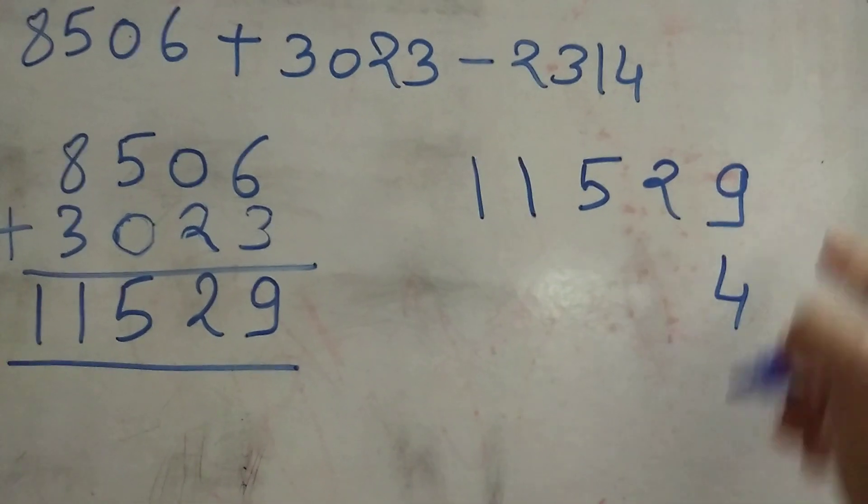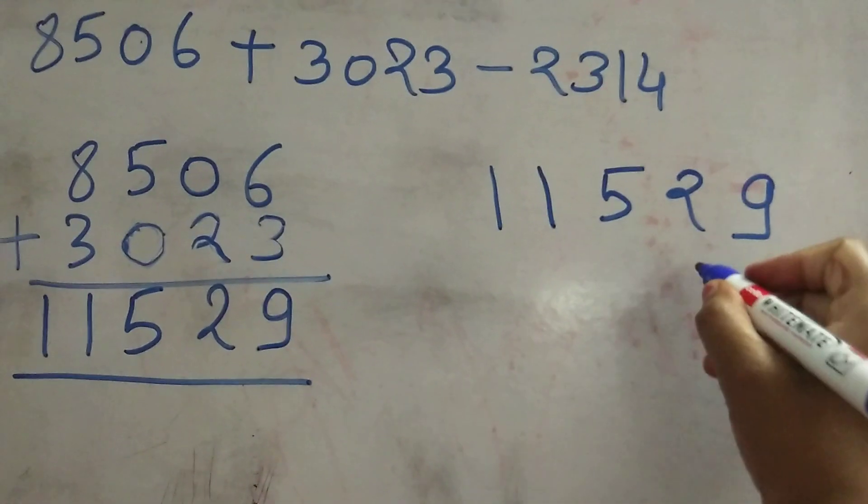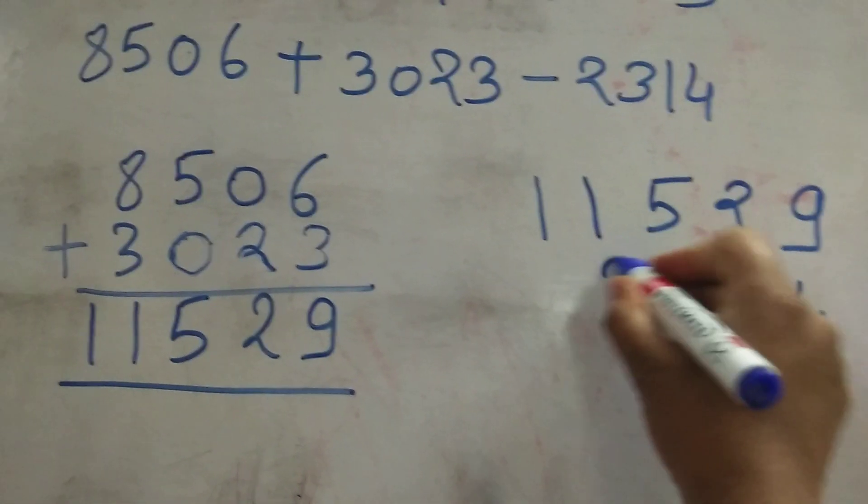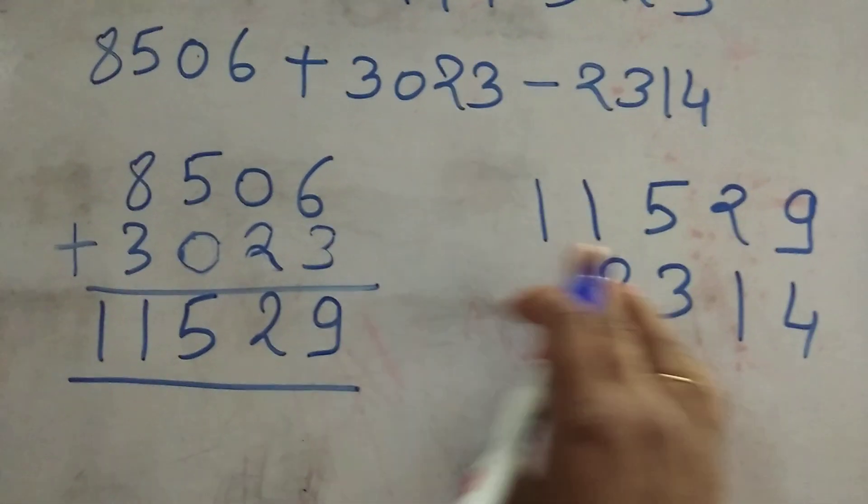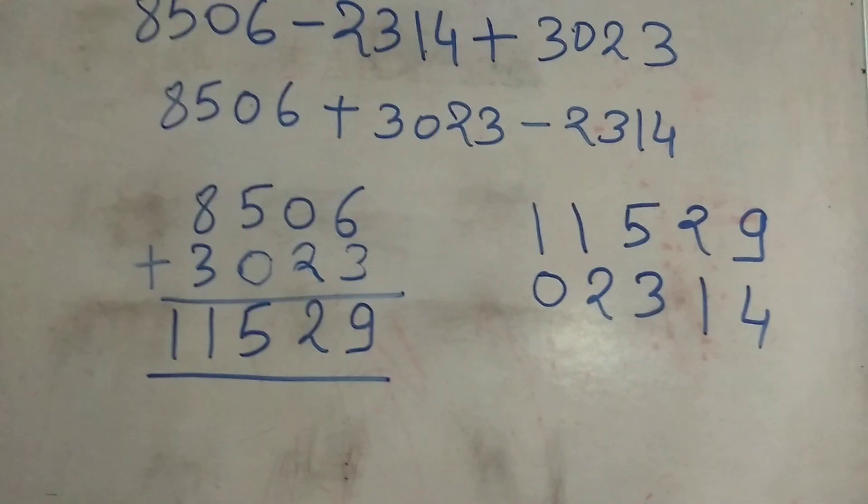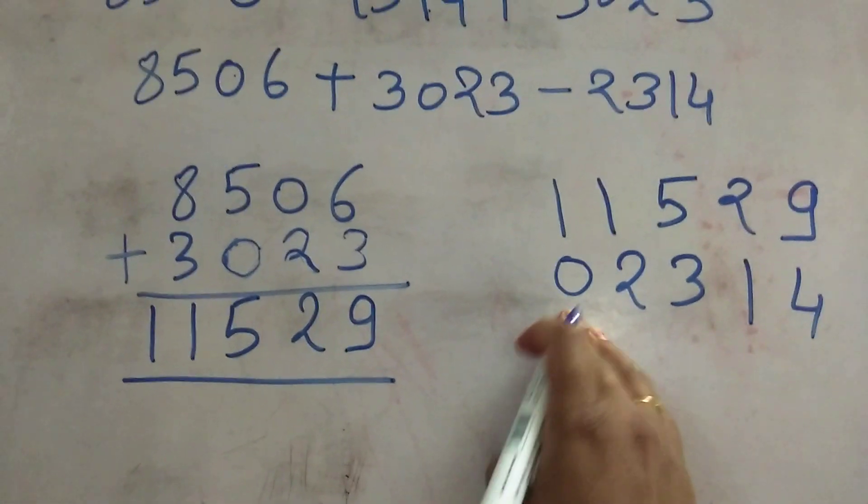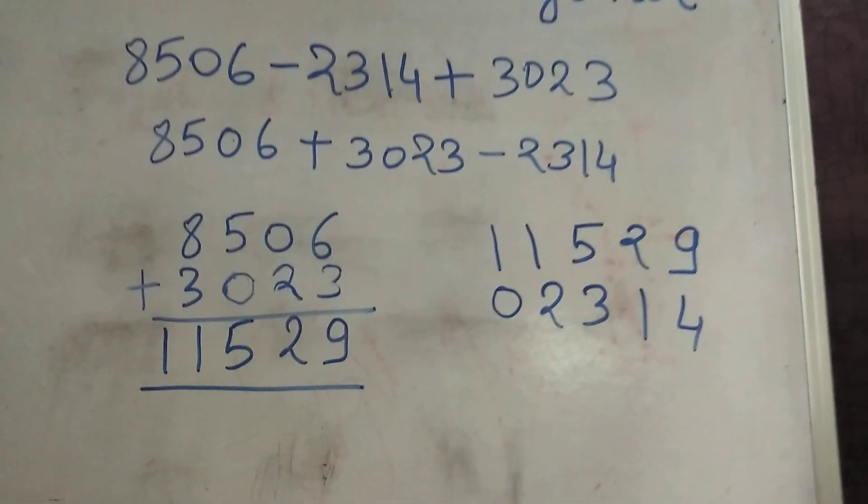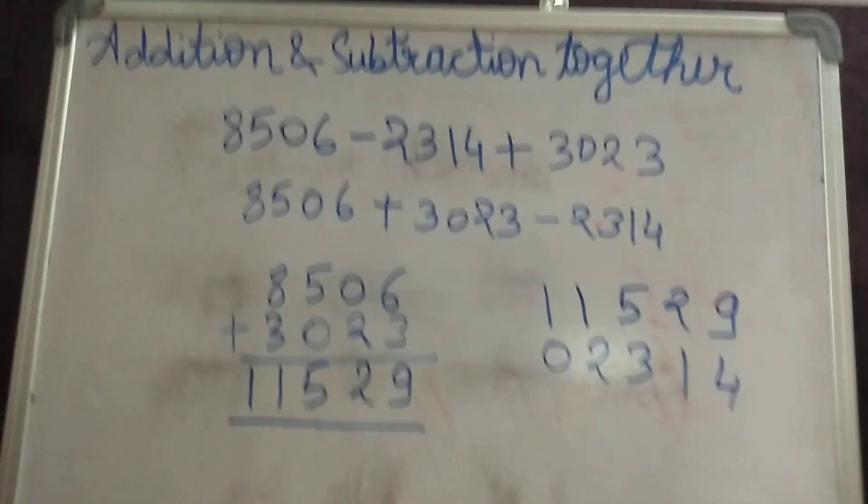We will start writing with the ones place digit: 4, 1, 3, and 2. Here no number is there, you can write for yourself 0 here, because 0 at the starting will never affect the number and never change the number.